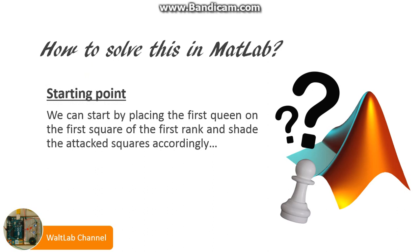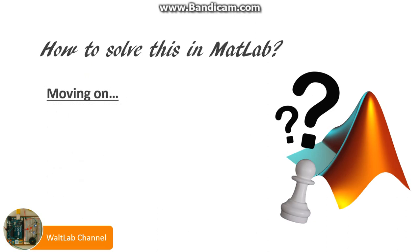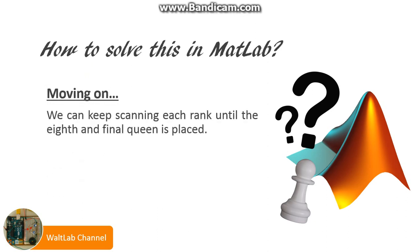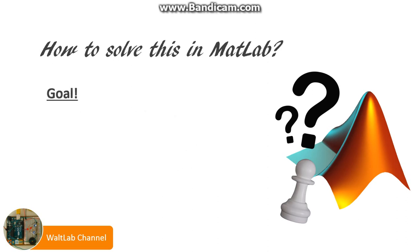And after doing that, we can place the second queen on the second rank, scan every possible combination for the third, the fourth, up to the eighth. Moving on, we can keep going until we reach the eighth and final rank, where the final queen is placed. If we reach this situation, then we have a solution, and we can store the digital map in a 1x92 cell array. So we reach the goal.